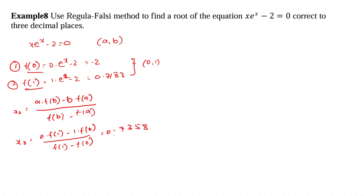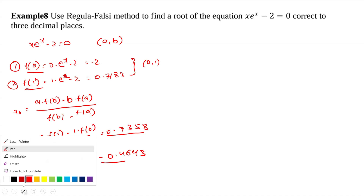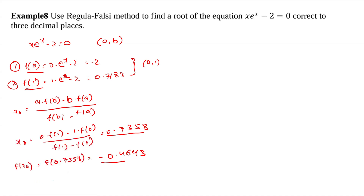Now we need to substitute 0.7358 in the given function. f(0.7358) is equal to minus 0.4643. The value we got is negative, so a will be changed. When the function value is negative, a is updated; when positive, b is updated. Now a becomes 0.7358 and b remains 1.